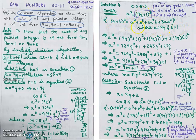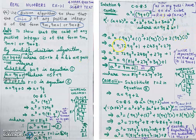Expanding: a³ = (9q)³ + 1³ + 3(9q)² × 1 + 3(9q) × 1². This gives: a³ = 729q³ + 1 + 3 × 81 × q² × 1 + 3 × 9q × 1, which simplifies to 729q³ + 1 + 243q² + 27q.